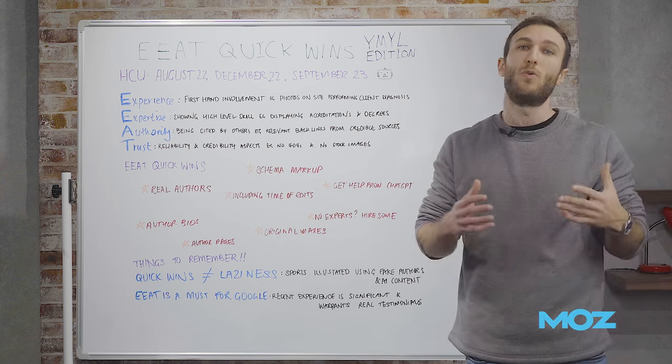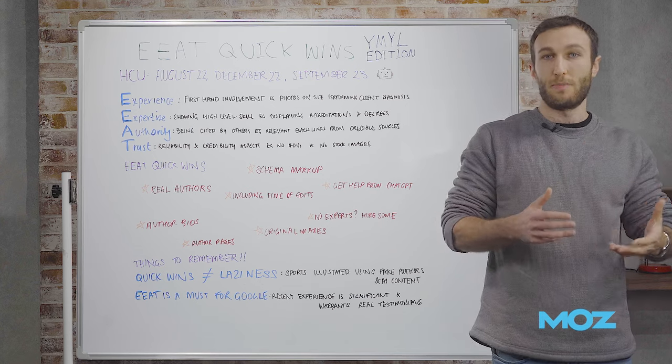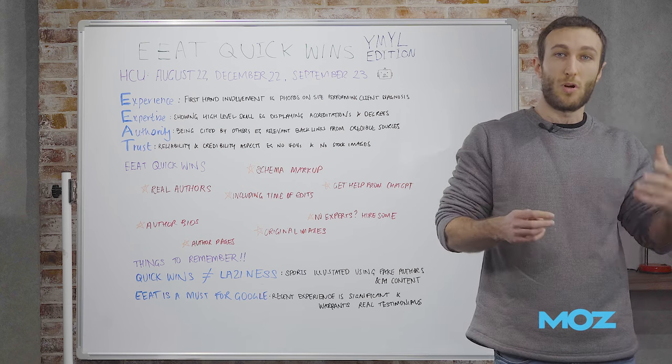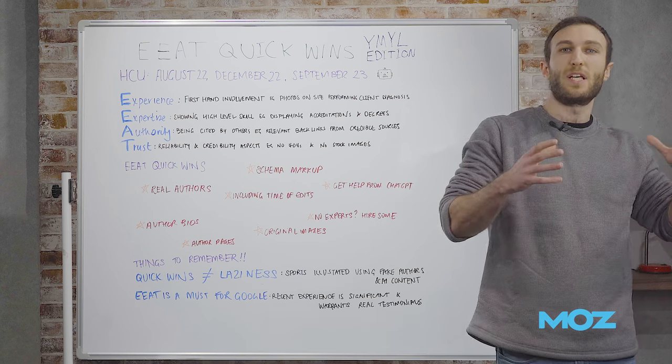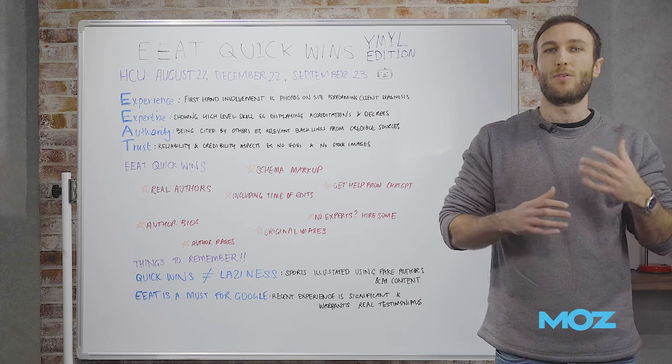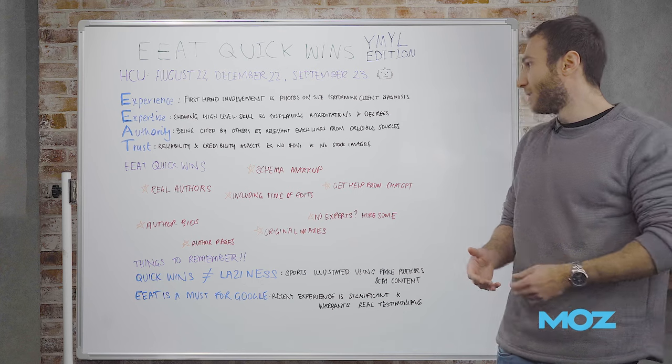Next, we have schema markup. This is more for search engines because schema markup is code that describes code. You can use schema markup across your content and author pages to specify who the person is, so Google better understands who's behind the content and what their credibility is.